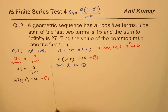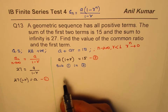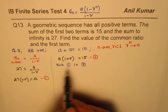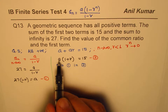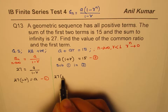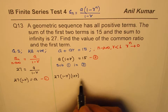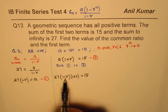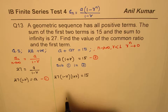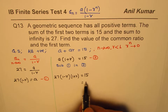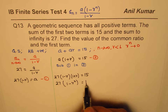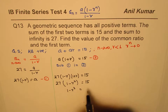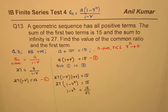So substituting a = 27(1 minus r) into a(1 plus r) = 15, we get 27(1 minus r)(1 plus r) = 15. Now (1 minus r)(1 plus r) is a difference of squares, so we get 27 times (1 minus r²) = 15. Dividing both sides by 27 gives 1 minus r² = 15/27.